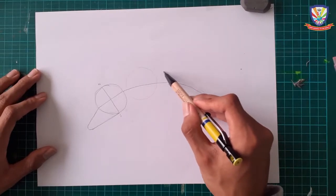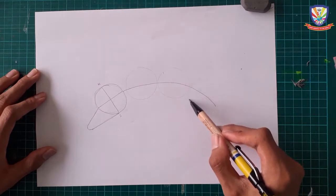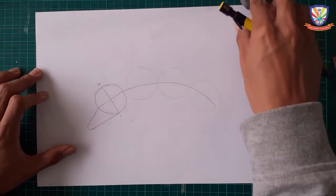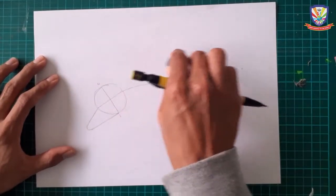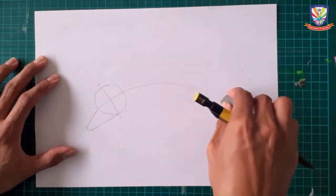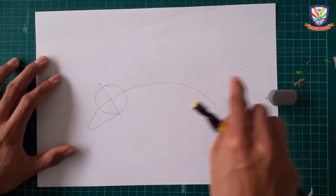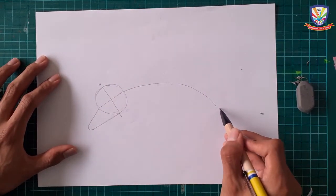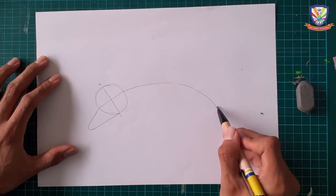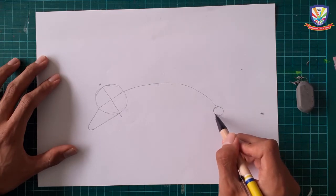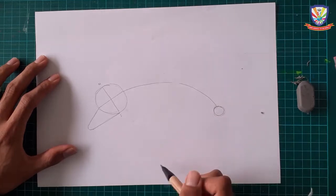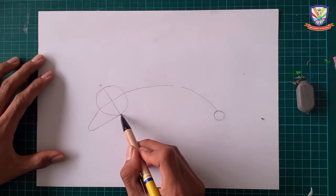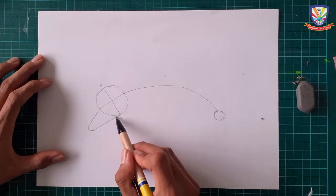I'm going to erase this one. Three heads. After you're done making the curved line for the body, then give a small circle at the edge of the tail. Give a small circle at the edge of the tail.